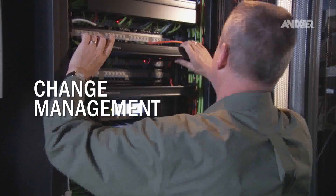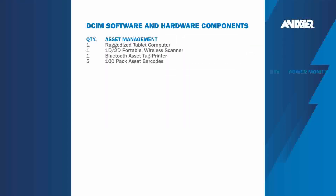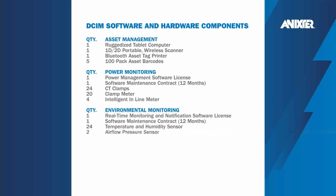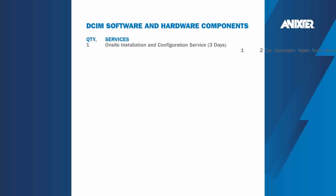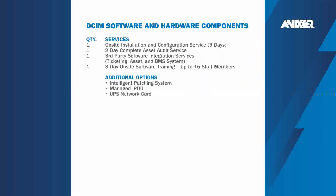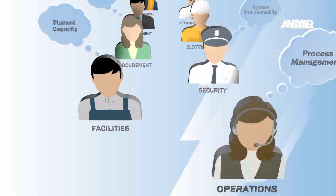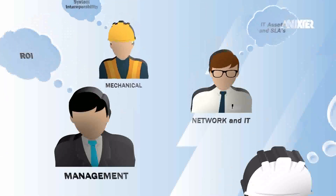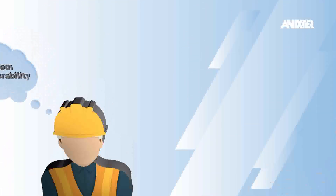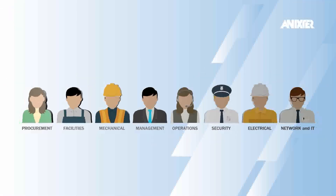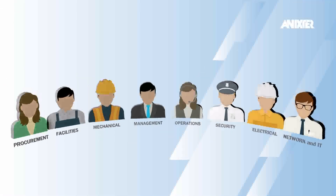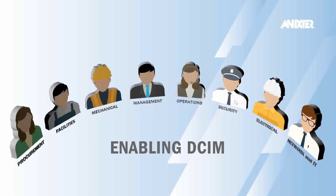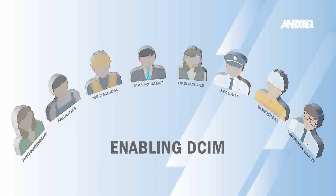Selecting DSIM hardware and software to meet your specific business requirements can be challenging. Define your needs and consider the interoperability of components and subsystems within your solution. Establishing a hardware roadmap and a business process is essential to achieving an ROI with a DSIM solution. Annexter can help ensure that the requirements of different departments are addressed and that the proper hardware foundation is in place to enable a smart DSIM deployment.